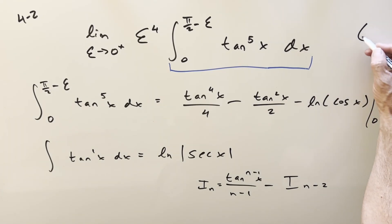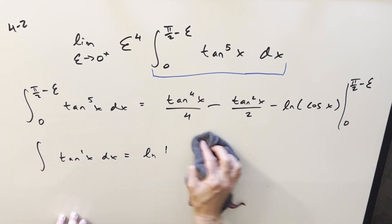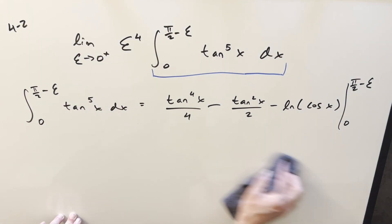And then we just need to evaluate from 0 to pi over 2 minus epsilon. So from here, let's just evaluate this thing before we get back. We have a limit to do at the end, but we're still just working on this integral.